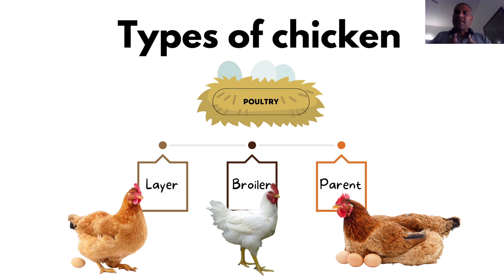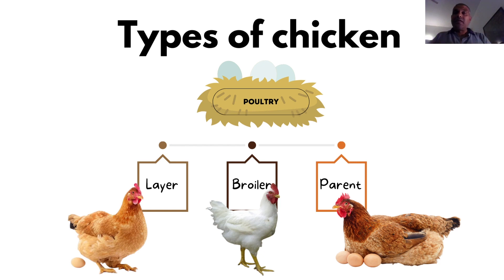Layers are those birds we keep for the sake of eggs. The eggs are typically unfertilized - they will not produce chicks even if incubated - and we want these chickens to lay eggs as frequently as possible, normally between one egg a day or one egg in two days.